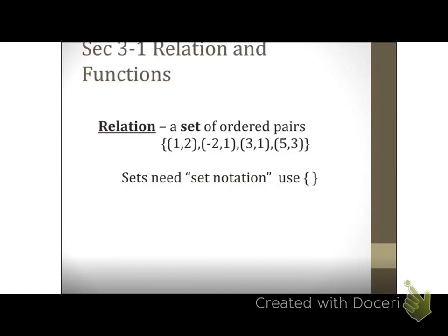A relation is just a set of ordered pairs. Here's an example of what a set of ordered pairs looks like. Notice, sets need what we call set notation. So we use these little squiggly brackets around them. We've got our squiggly bracket, and we've got our list of ordered pairs here.